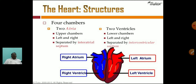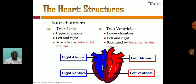Now the inner structure of the heart: the chambers. There are four chambers. The upper parts are called auricles or atria. The lower chambers are called ventricles — right and left.